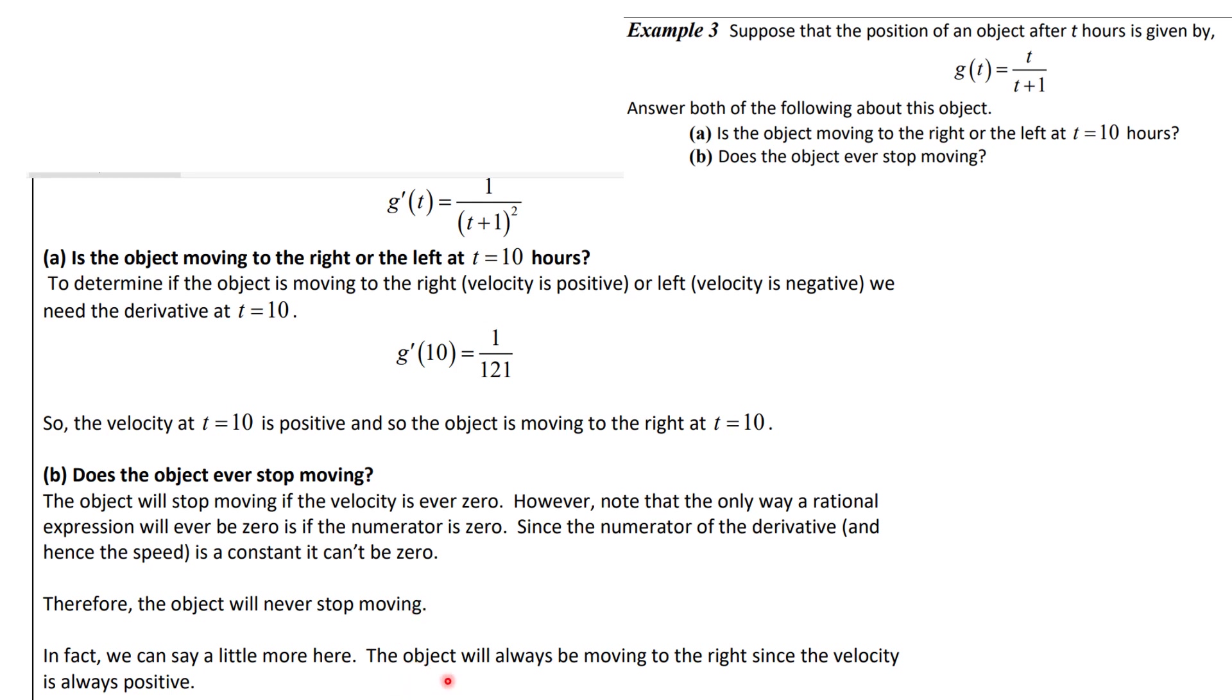In fact, the object will be moving to the right always because this number is always positive. 1 is positive and t plus 1 whole squared is positive, so the derivative is always positive.